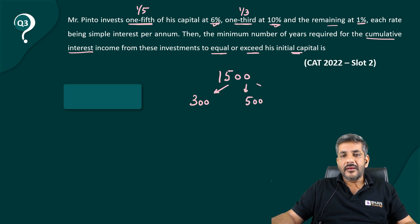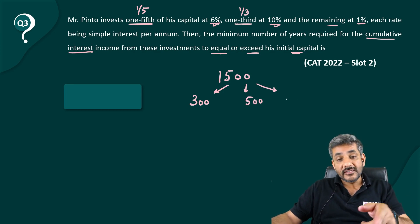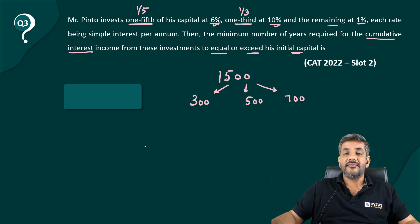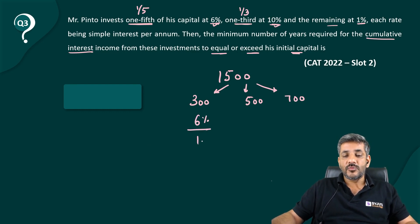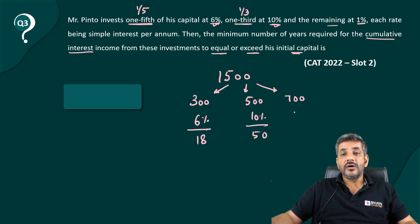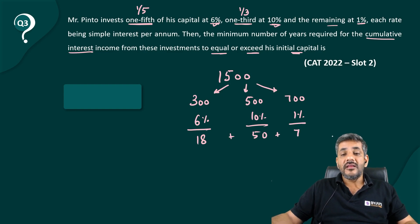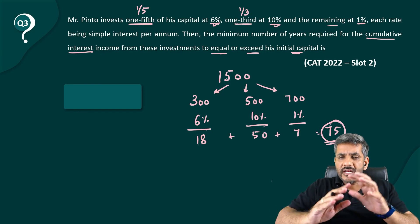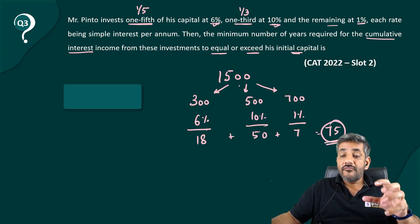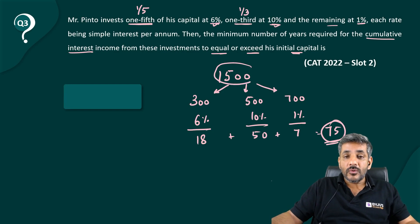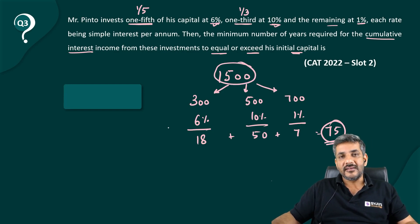You get 6% interest on 300, which equals 18. You get 10% interest on 500, which equals 50. You get 1% interest on 700, which equals 7. So the total cumulative annual interest from all three parts is 18 + 50 + 7 = 75 rupees. We want this to equal or exceed 1500.